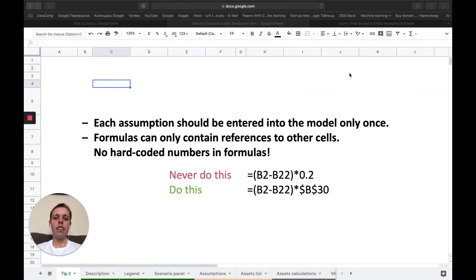The second rule related to working with assumptions is that formulas can only contain references to other cells. They can never contain hard-coded numbers directly within the formulas. Here you can see an example of how you should never write formulas. You should never include numbers directly into formula. Instead of this, you should save this 0.2 into a separate cell, for example B30, and reference it following this approach.